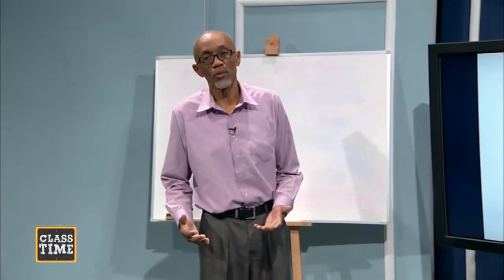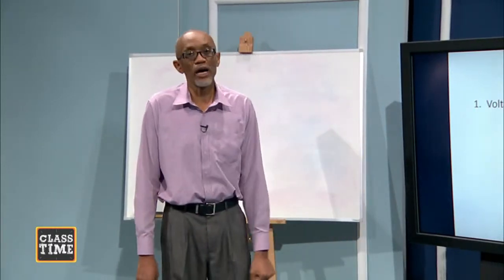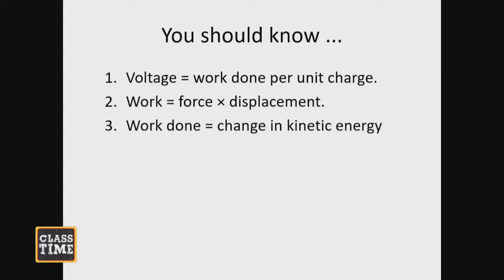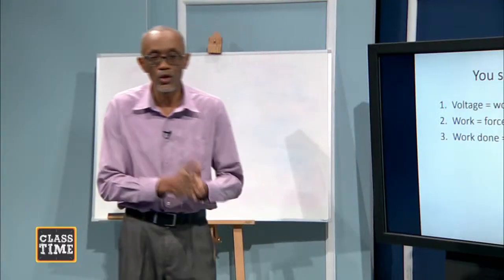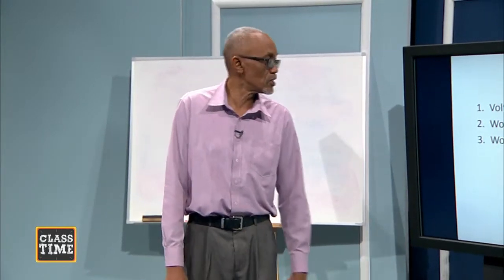When you come into our lesson, you must have some prior knowledge. You should know that voltage is equal to work done per unit charge. The potential difference or the voltage between two points is the work done to move one coulomb of charge from one point to another. You should also know that work is force times displacement, and that work done is equal to change in kinetic energy — that's called the work-energy theorem.